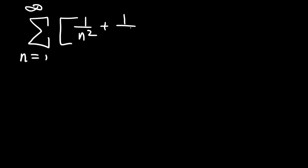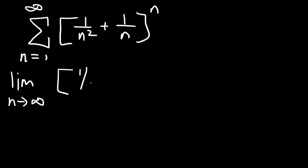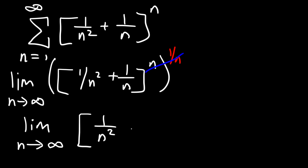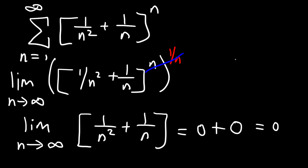Now let's try: the series of 1 over n squared plus 1 over n, all raised to the nth power. Applying the root test, we raise it to the 1 over n — those exponents cancel — leaving the limit as n goes to infinity of 1 over n squared plus 1 over n. As n becomes very large, both 1 over n squared and 1 over n go to 0, so the limit is 0. Since 0 is less than 1, the original series converges.